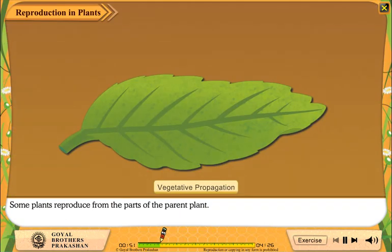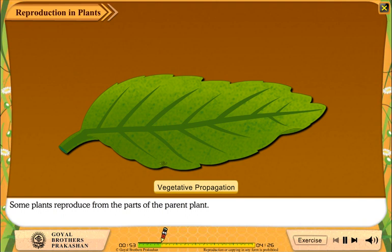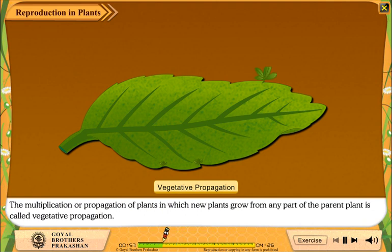Some plants reproduce from the parts of the parent plant. The multiplication or propagation of plants in which new plants grow from any part of the parent plant is called vegetative propagation.